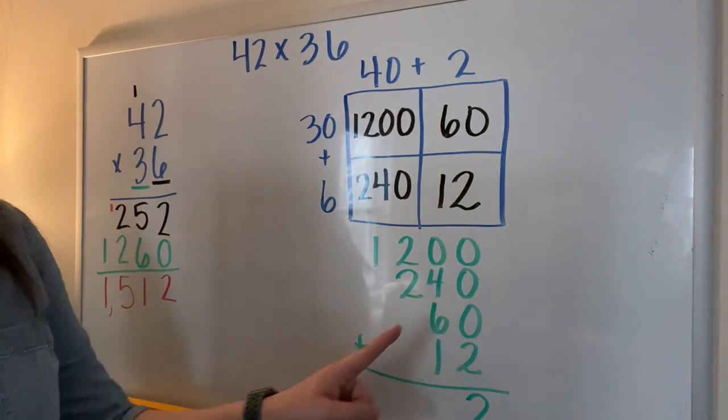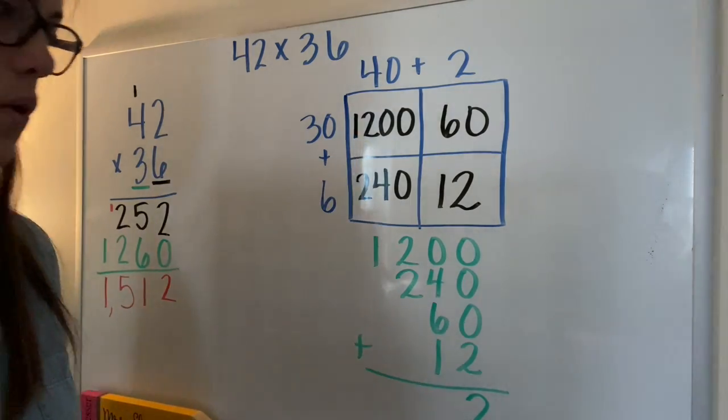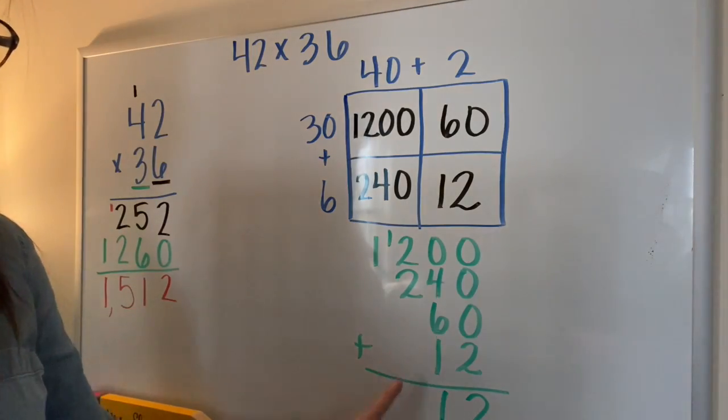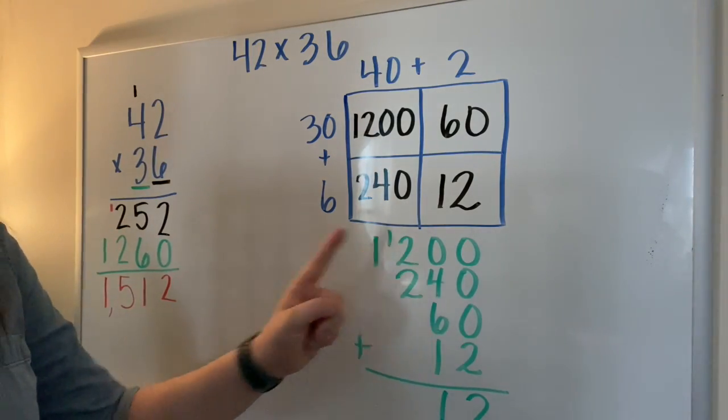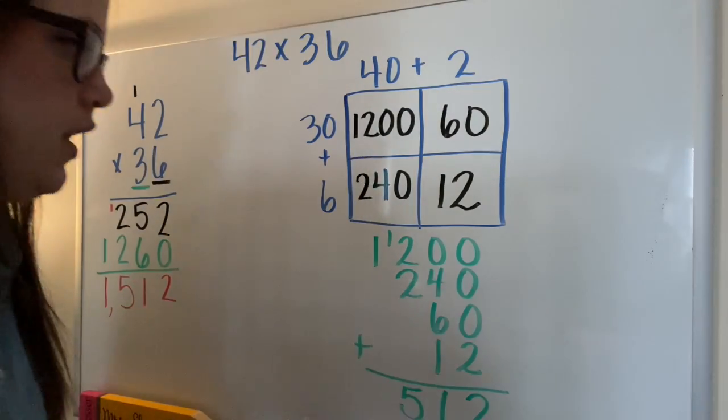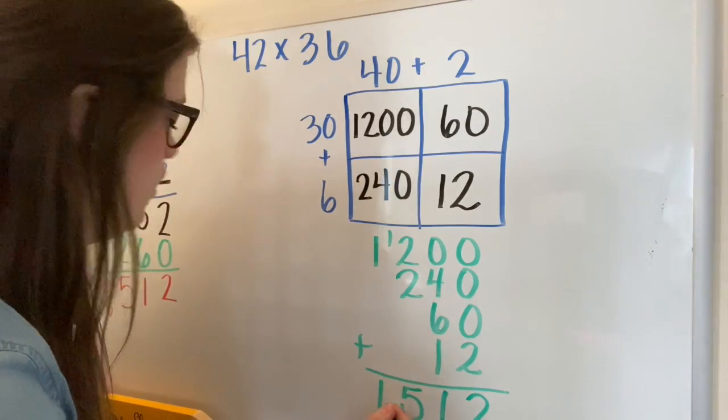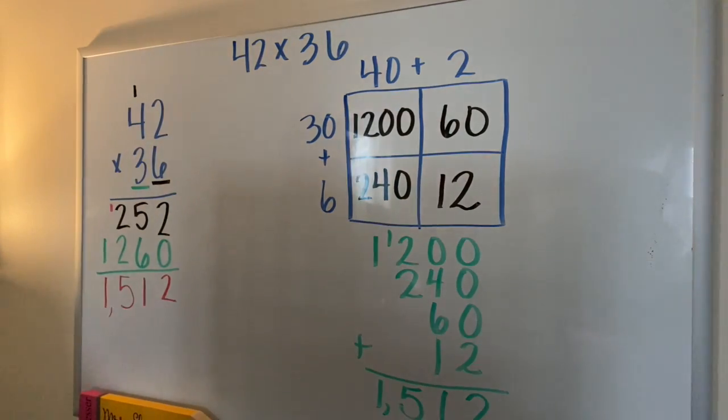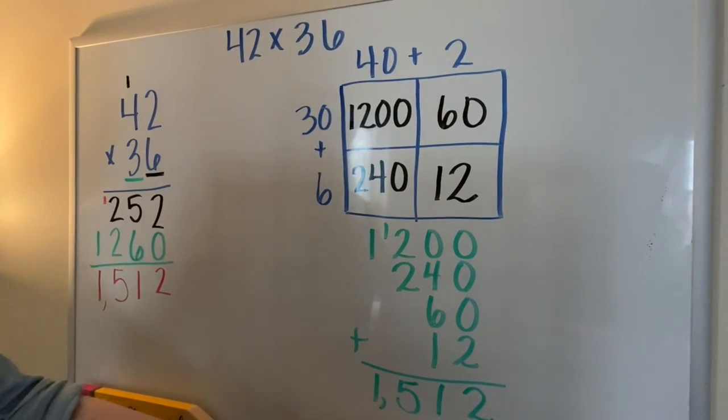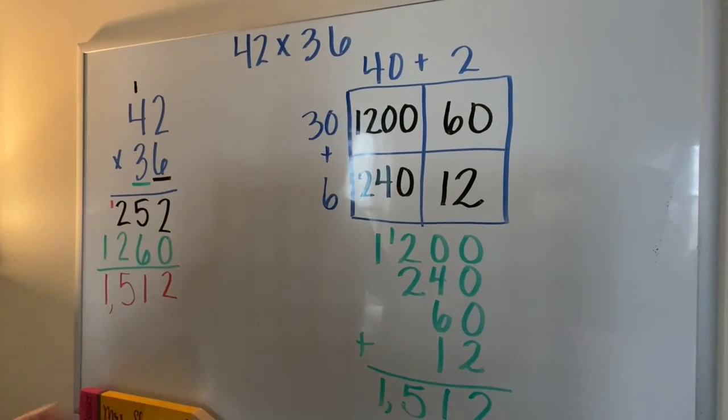In the tens place, six and four is ten, plus one more is eleven. In the hundreds place, two and two is four, plus one more is five. And in the thousands place, one and nothing is one. As you notice, both ways get me the same answer.